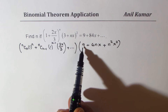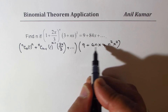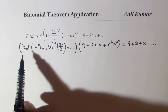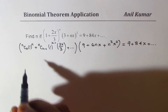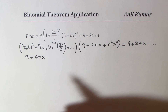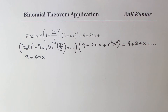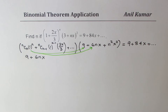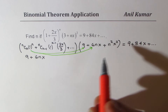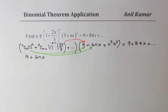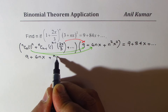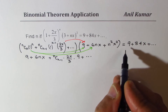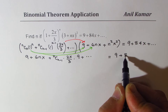On the left side, multiplying 1 by the first two terms of the squared expansion gives 9 + 6nx. Then using the second term of the first binomial — which is n times 2x/3 — and multiplying by just 9, we get nC(n−1) × 2x/3 × 9. Since nC(n−1) = n, this gives 9 × n × 2x/3 = 6nx. On the right side we have 9 + 84x.